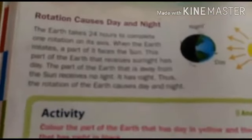Rotation, children. The earth spins like a top about an imaginary line called axis. This is axis. The spinning movement of the earth is known as rotation. Rotation causes day and night.